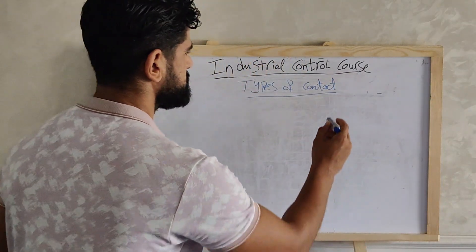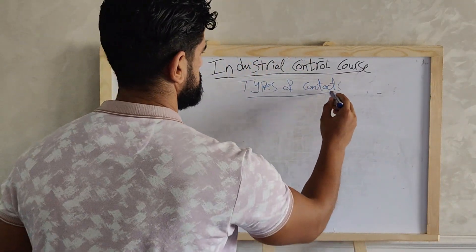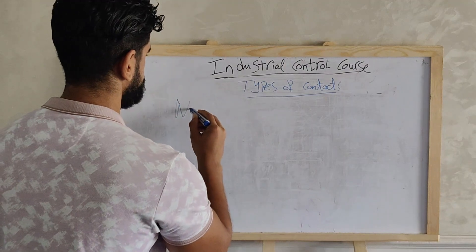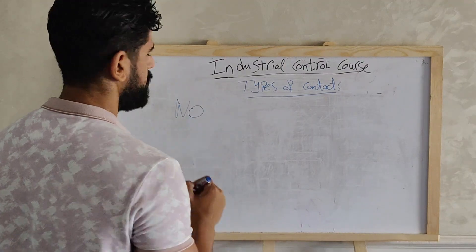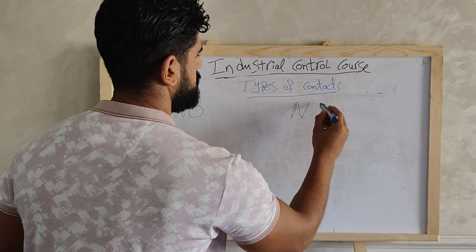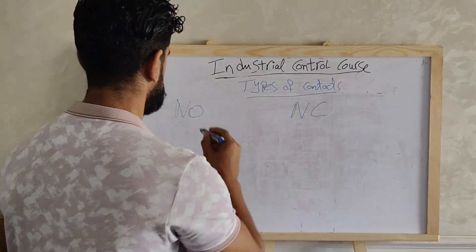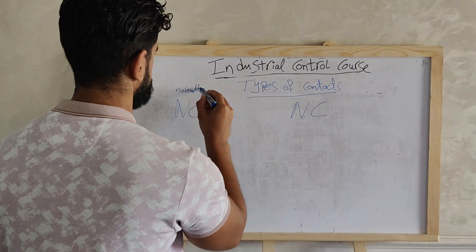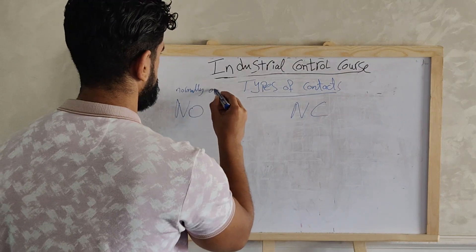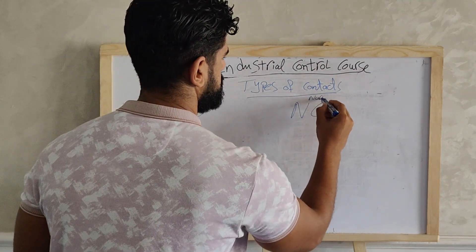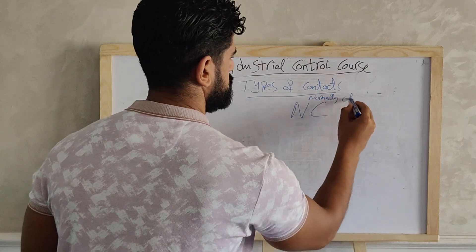Here we have two main types of contacts: a normally open contact and a normally closed contact. This one is called normally open and this one is called normally closed.